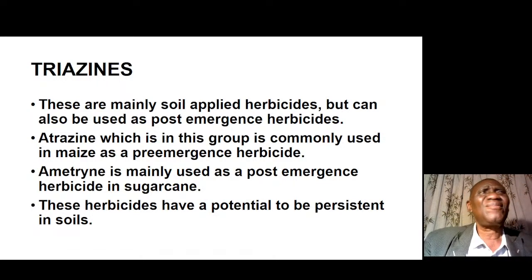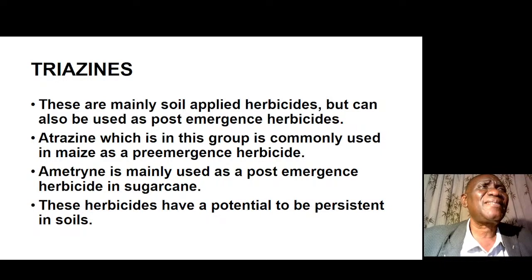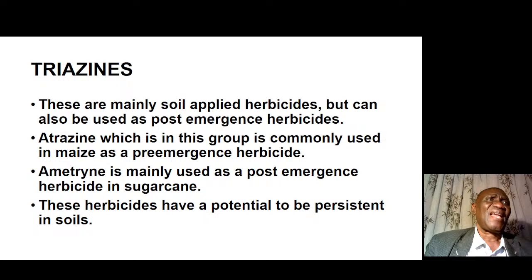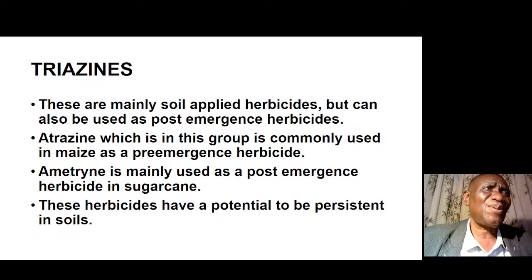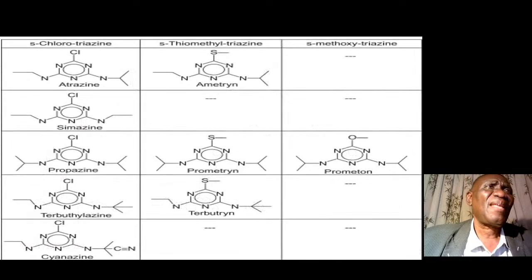We will now discuss triazines, used here as an example of herbicides to explain the mode of action of herbicides. Triazines are mainly soil-applied herbicides but can also be used as post-emergence herbicides. Atrazine is commonly used in maize as a pre-emergence herbicide; ametrine is mainly used as a post-emergence herbicide in sugarcane. These herbicides have potential to be persistent in soils.